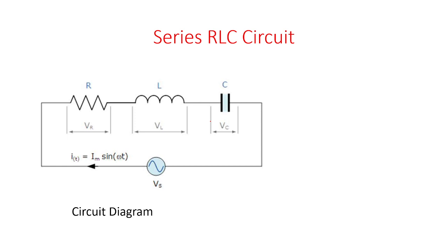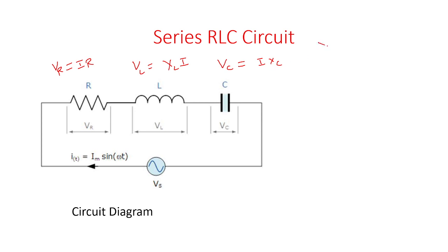Same current flows in the resistor, inductor, and capacitor, but voltage will divide. The voltage across resistor is Vr, voltage across inductor is Vl, and voltage across capacitor is Vc. Vr is equal to Ir, so voltage and current are in the same phase. Vl is equal to XL·I, where XL is jωL, meaning voltage is leading by 90 degrees from the current. Vc is the voltage across the capacitor, that is I·Xc.